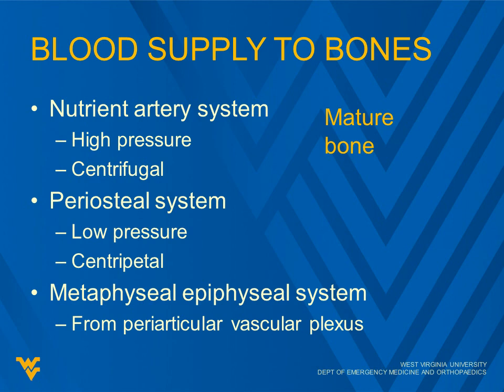The periosteal system is low pressure, centripetal, comes from the outside in, and that's more prevalent for immature bone. And then finally, the metaphyseal-epiphyseal system has a small part in the blood supply of the bones, especially those around joints, but it comes from the periarticular vascular plexus.